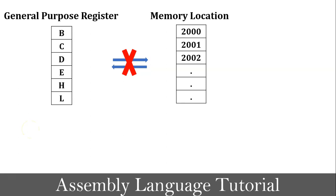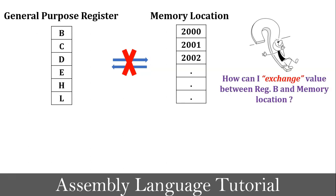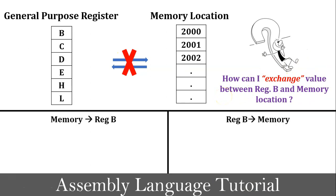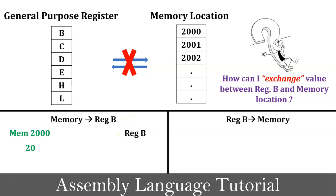Because no direct instruction is available in microprocessor 8085. So a question arises: how can I exchange the value between general purpose register B and a memory location? So here the key word is exchange — meaning value is exchanged between memory to register B and register B to memory. So first I will discuss how to load a value from memory location to register B. For example, the value 20 is stored at memory location 2000, so value 20 needs to be loaded into register B from memory location 2000.